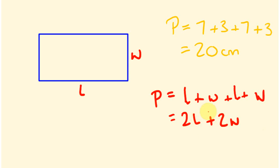A bit later on we can substitute values in. If the length is 7, that's 2 times 7, and the width is 3, so 2 times 3. Two times 7 is 14, two times 3 is 6, giving us 20 centimeters. Written algebraically, this expression has two terms — L and W — and both have a coefficient of 2 in front. The number in front of a variable is called a coefficient.